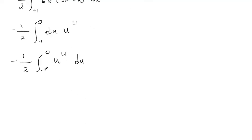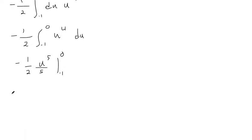Okay, so now we just need to evaluate the antiderivative. So the power goes up, so that's u to the 5th over 5. And the limits of integration is negative 1 to 0. So before I evaluate the limits of integration, one last simplification step, multiplying that negative 1 half.